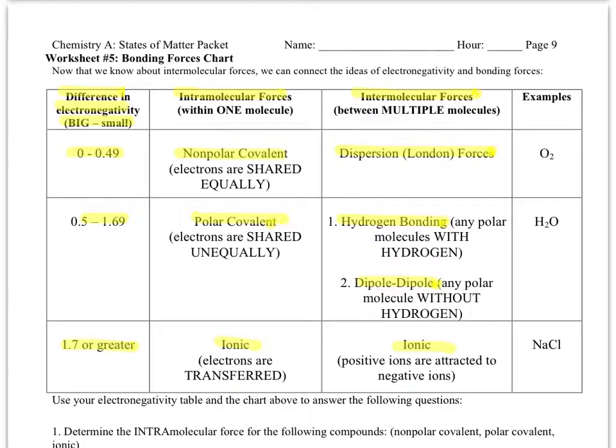Now what I've highlighted in yellow is what will be on your chart on the test. Basically all these little hints that are in parentheses along with the examples in the farthest right column are going to be removed. But otherwise this chart will be on your test.